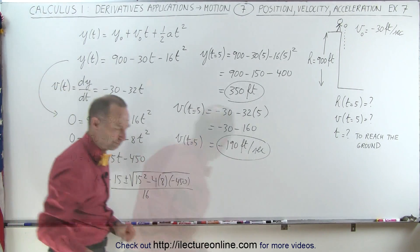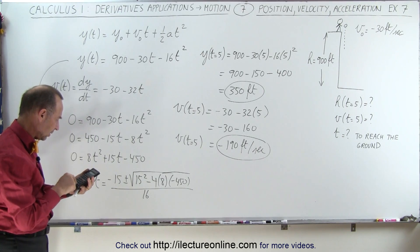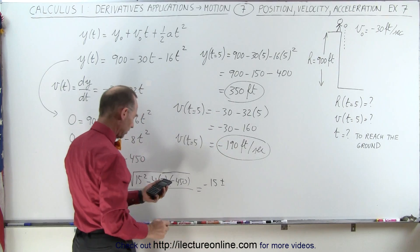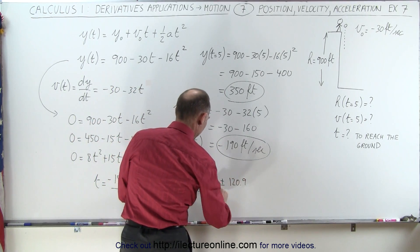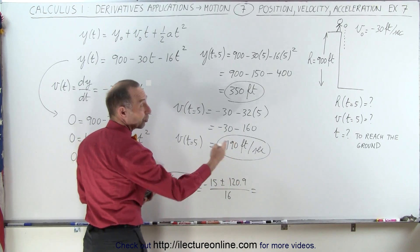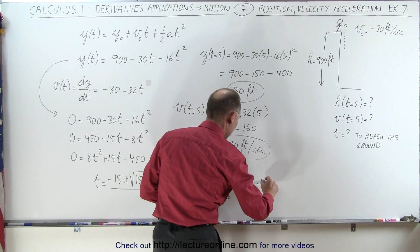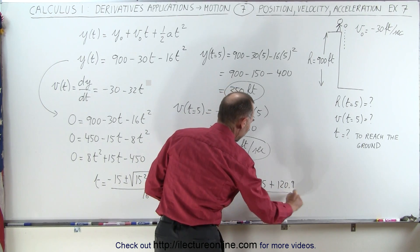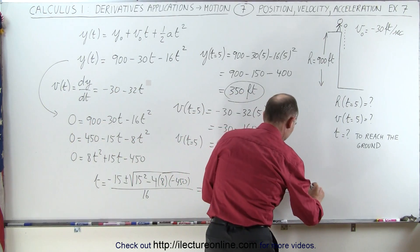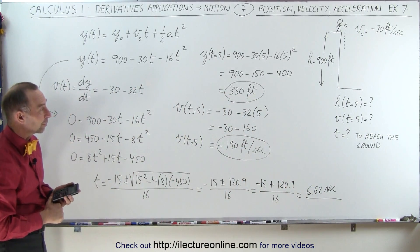Now we need a calculator. We compute 450 times 4 times 8 plus 15 squared, then take the square root. This gives minus 15 plus or minus 120.9 divided by 16. We cannot take the negative solution because that gives negative time — the rock cannot reach the ground before it's thrown. So we take the positive option: minus 15 plus 120.9 divided by 16, which gives approximately 6.62 seconds to reach the ground, just as predicted — somewhere between 6 and 7 seconds.